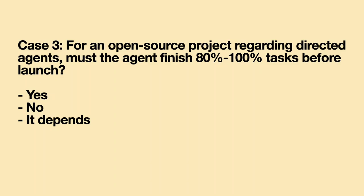Case three: I worked on an open source project where I created directed AI agents — like AutoGPT, you put in your tasks, the agent does its thing and solves the problem. The question: do you think before releasing the open source project, I should ensure that 80 to 100% of the tasks the agent is able to finish?